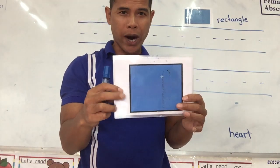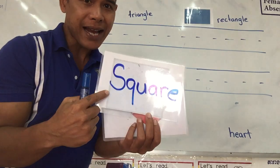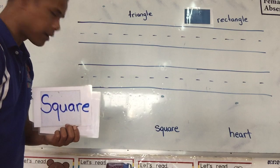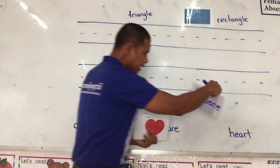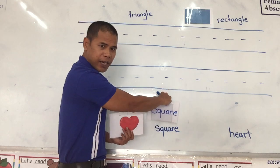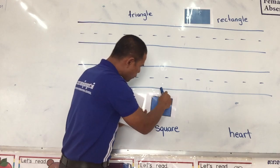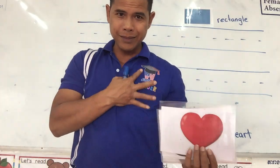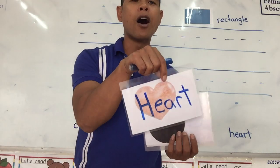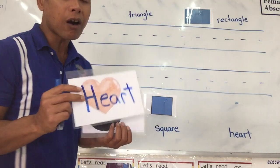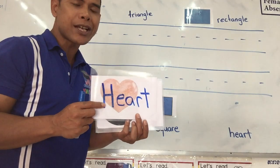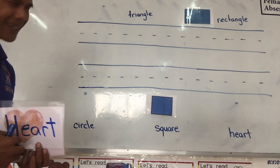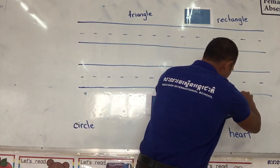Next one is square. Square starts with the letter S. Can you find the word square for me? Yes, that is the word square. Excellent job. Next one — it is called heart. Heart starts with the letter H — the 'ha' sound. Can you find it? Excellent — heart is down here.